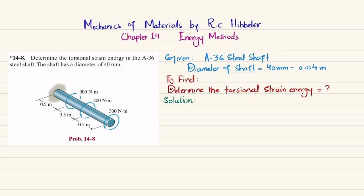We have to find the torsional strain energy due to the applied torques. The strain energy U due to torsion is equal to the sum of T squared times L divided by 2GJ, where T is torque, L is length, G is the modulus of rigidity, and J is the polar moment of inertia. We label the shaft points as A, B, C, and D, and will find the internal torque in sections AB, BC, and CD.